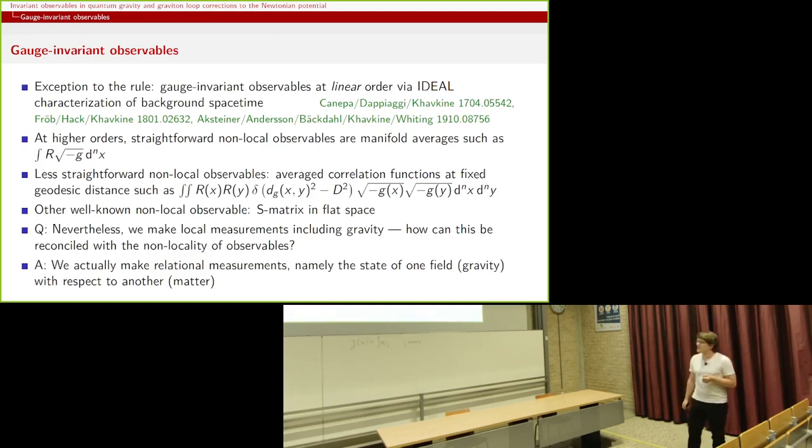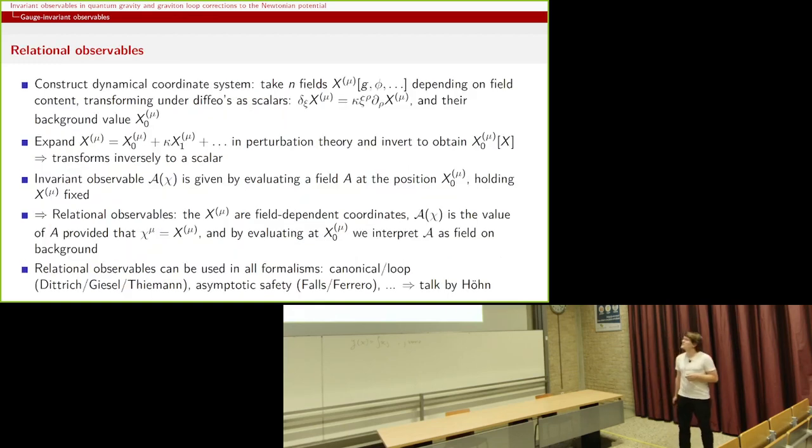So the question is, how can you reconcile this with the non-locality of observables? And the answer is, well, we've heard this already, but let me emphasize the point again. What we actually do is we make relational measurements. We always look at the state of one field with respect to another field. So, for example, that point with respect to the floor. Gravity with respect to matter, for example. And our question is just, can we make this nice and precise? And, yes, we can do. We've heard the talk, of course, on this.